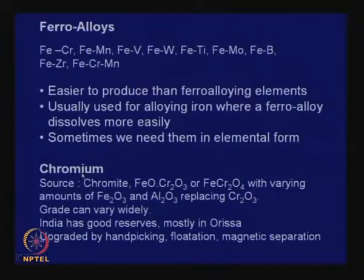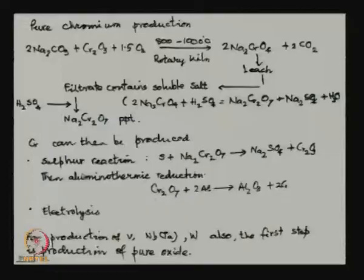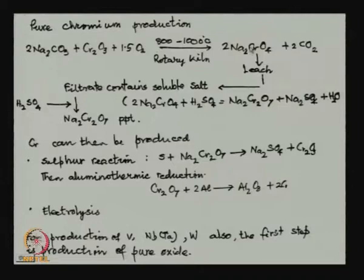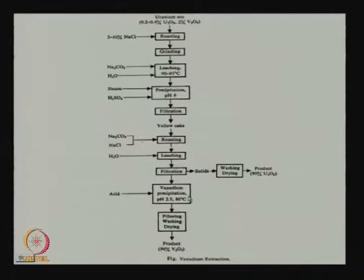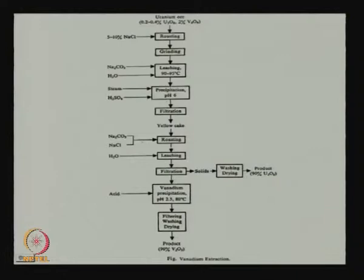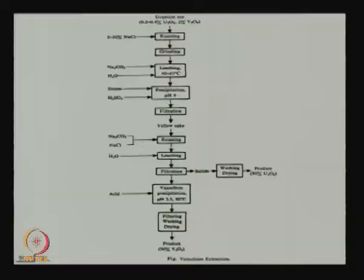But sometimes we need them in elemental form. I have given the example of how chromium is produced from chromite by sodium carbonate roasting, making a chromate and then treating with sulphuric acid to produce Na₂Cr₂O₇, and from there producing pure chromium oxide, which can go for electrolysis or aluminothermic reduction. There are many oxides in nature from which we sometimes need pure metals, and there are elaborate flow sheets for making these elements by first producing a pure oxide.